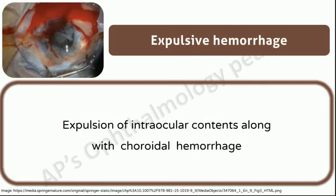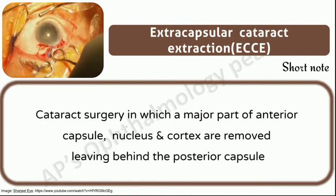Expulsive hemorrhage: expulsion of intraocular contents along with choroidal hemorrhage. Extracapsular cataract extraction: cataract surgery in which a major part of the anterior capsule, nucleus, and cortex are removed, leaving behind the posterior capsule. The types of extracapsular cataract extraction are conventional ECCE, SICS, phacoemulsification, and FLACS.